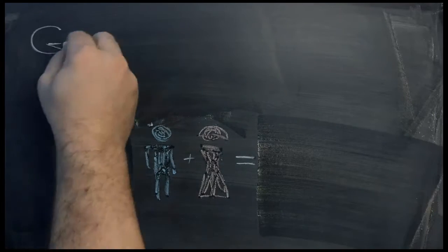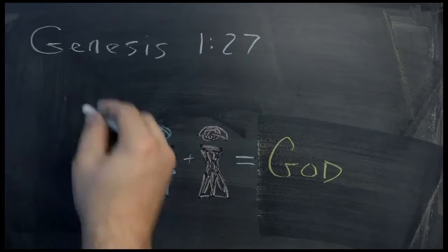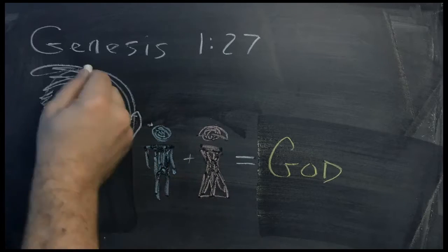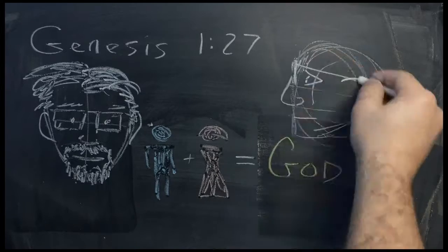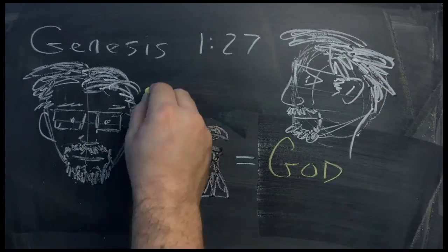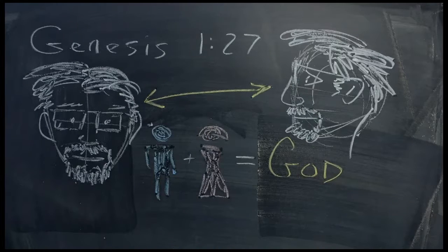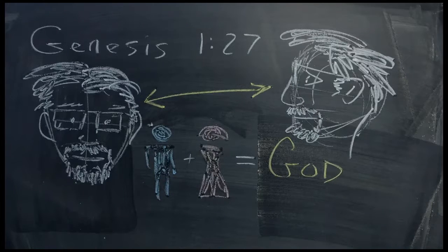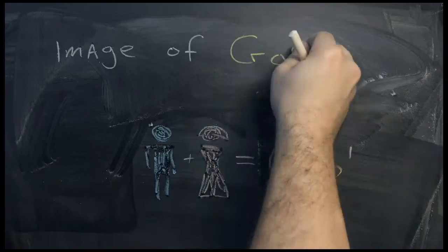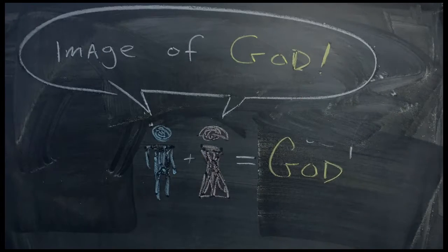God made us in his image, male and female. In a sense, the difference between male and female is the difference between two pictures of the same person, one taken head-on and the other one taken in profile. They're very similar in many ways, but different in others. A man has only one X chromosome, just as a picture in profile has only one eye. But we are all images of our Heavenly Father, made in his image, with equal value and worth.